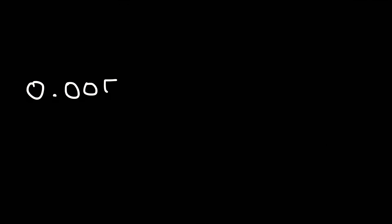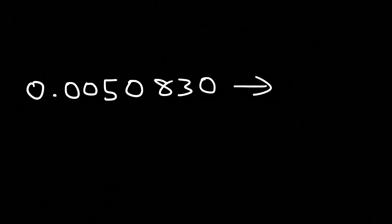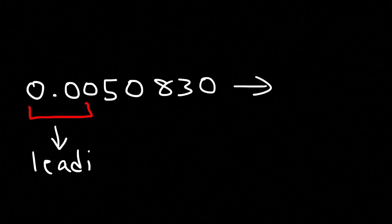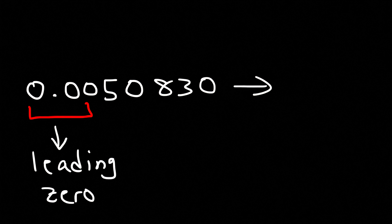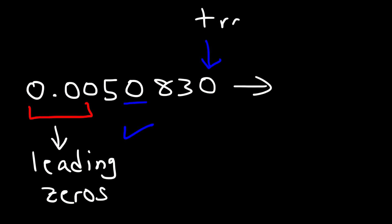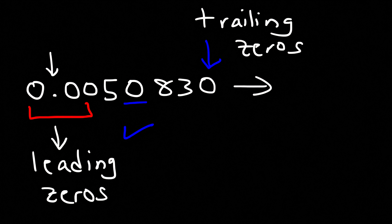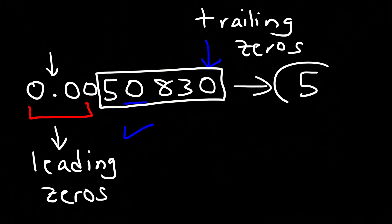To review, let's try this example: .0050830. The leading zeros are not significant. The zero in between two non-zero numbers is significant. And the trailing zero is significant because there is a decimal point. So these five digits are significant, giving five significant figures.